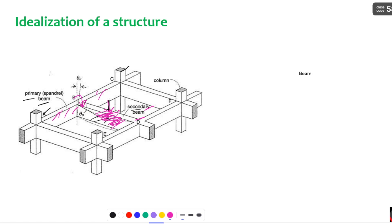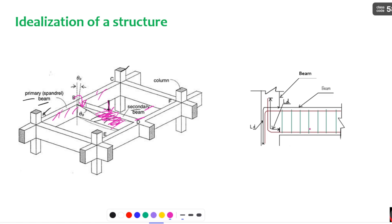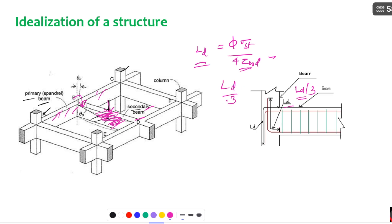To achieve this moment release practically, they provide LD/3 development length. If you calculate the development length using the formula: LD = π × σst × φ / (4 × τbd), as given in the IS code, you get a certain development length. If you provide the full development length, it acts as a rigid connection — both moment and shear are transferred. By providing only LD/3, you attain moment release: only shear is transferred and there is no moment transfer from the secondary beams to the primary beams. This is very important for civil engineers working in industries.